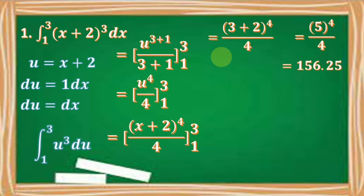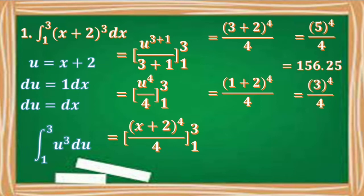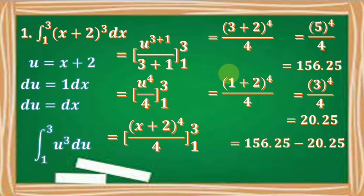Next, we solve for the lower limit by replacing x by 1. We have the quantity 1 plus 2 to the 4th over 4. Since 1 plus 2 is 3, we have 3 to the 4th over 4, which equals 20.25. Then subtracting 20.25 from 156.25, we get 136 as our final answer.